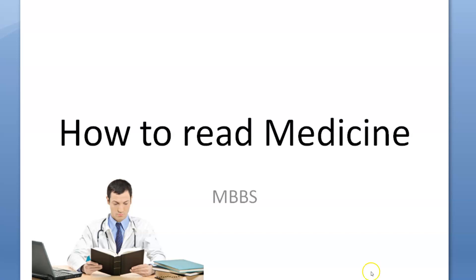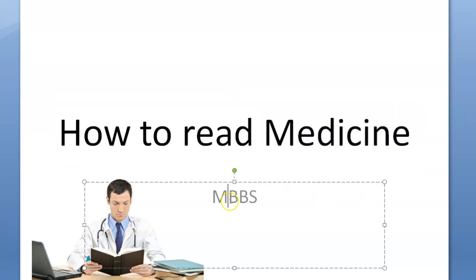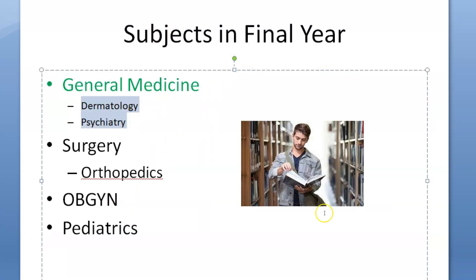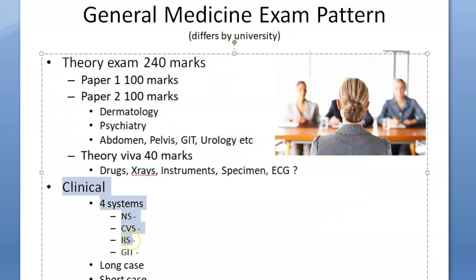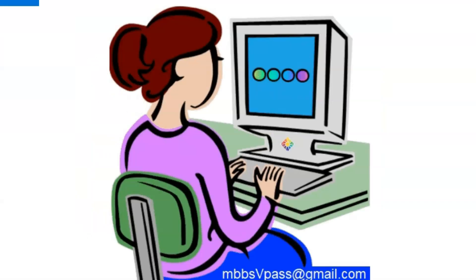In this video we want to look at how to read medicine. When we say medicine, we're talking about the subject in MBBS final year - General Medicine. Under it you have Dermatology and Psychiatry, which are covered in the same textbook, so no need to buy separate books. These two are a very small portion of General Medicine. You will have a theory exam and a clinical exam, meaning practical, where you're given a real patient to take history from.